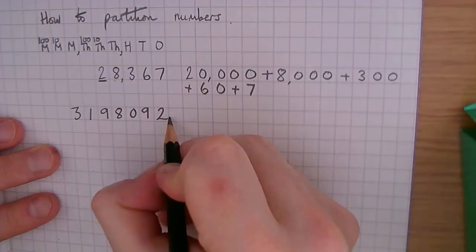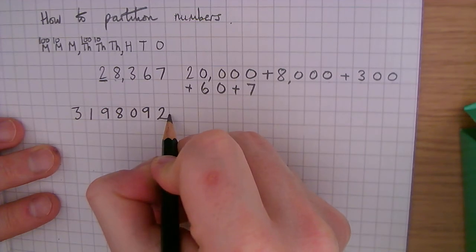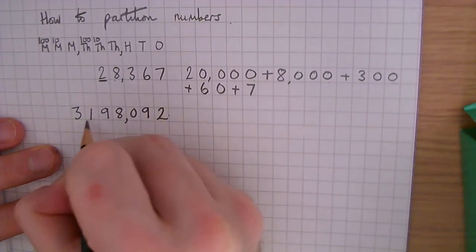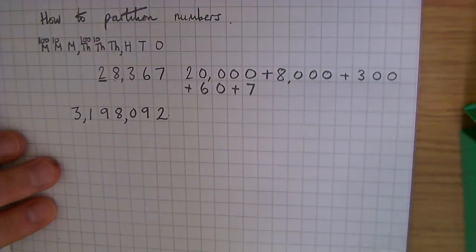Put the commas in first. So go from the ones, and we're going to count one, two, three, comma, one, two, three, comma. This is quite a large number.